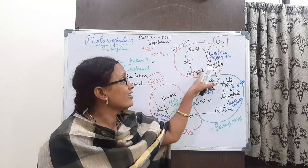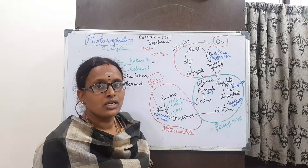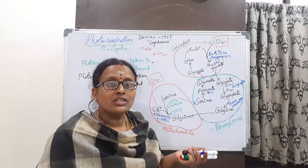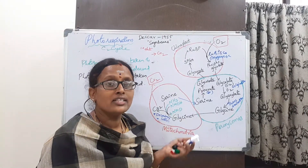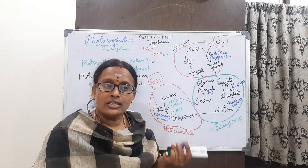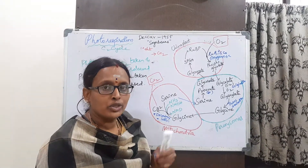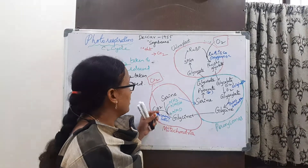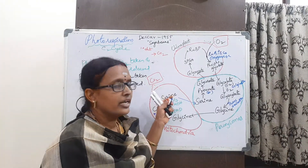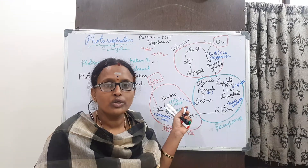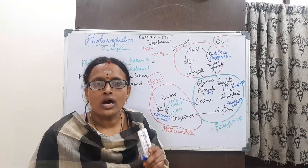Regeneration is taking place but there is no synthesis of sugars, and ATP is not synthesized. Instead, it is utilizing energy. In general respiration, energy is released, but photorespiration is an energy-consuming process. People say it is a waste process in the plants because it neither synthesizes ATPs nor sugars.